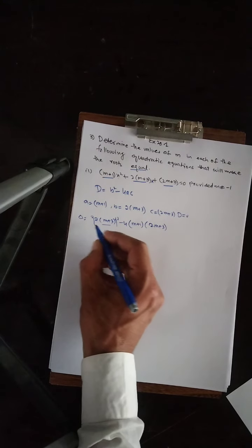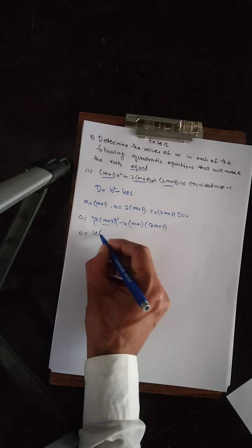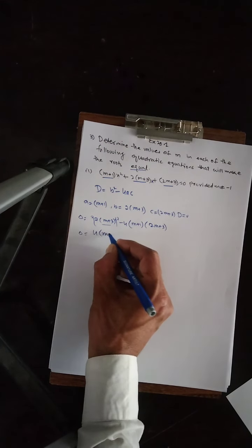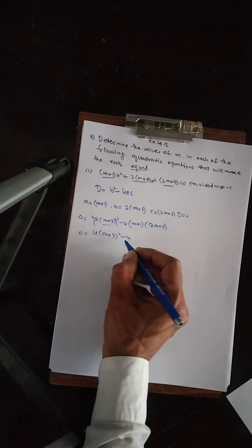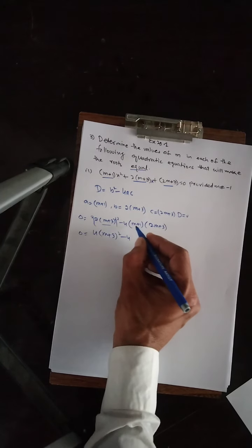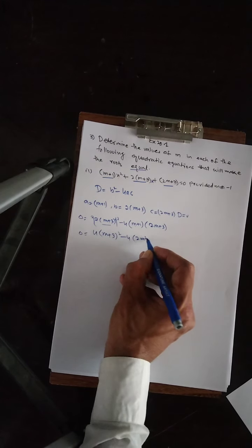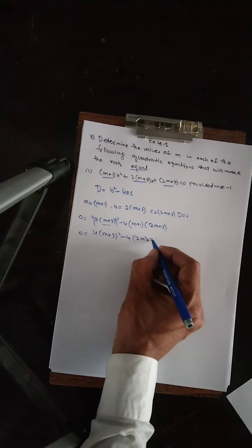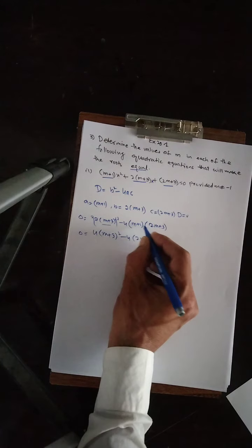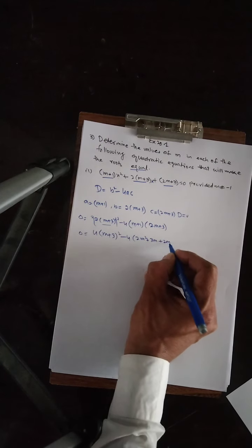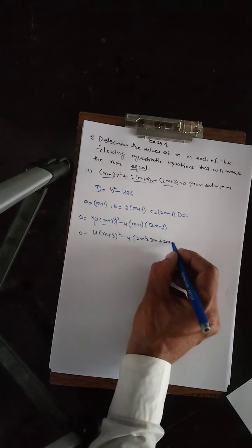Expanding: 2 squared is 4, bracket equals m plus 3 whole square, which gives minus 4. Then 2m squared equals m, 3m equals 3M, 2m equals 2M, and 1 equals 3.